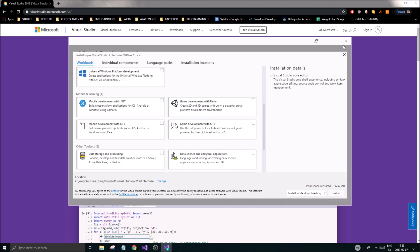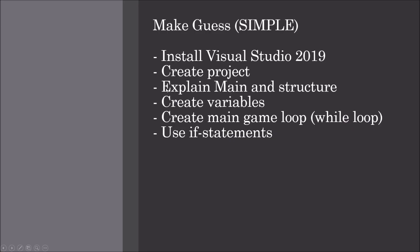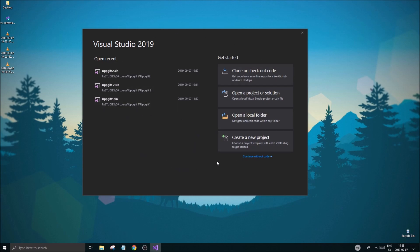In this video we're going to create a guessing game — a very simple version of it. We're going to install Visual Studio 2019, create a project, explain all the functions and the structure of a default file. We'll create variables with different variable types and explain those, create the main game loop, talk about what a while loop is, discuss if statements, and explain how everything connects together.